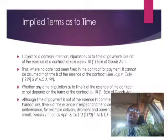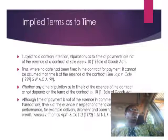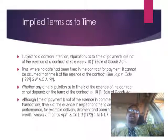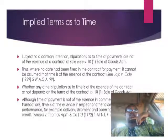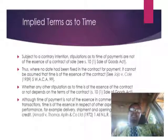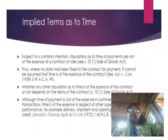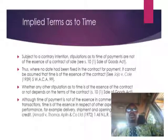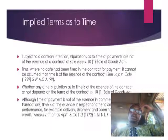There are other obligations that could be performed — for example, delivery, nomination or appointment of a transporter, shipment of goods. The law makes provisions for these as well. It says whether any other stipulation as to time is of the essence of the contract or not depends on the terms of the contract. So all other stipulations — in relation to delivery, shipment, nomination of a particular transporter — will depend on the terms of the contract.